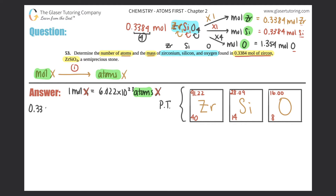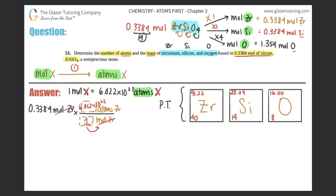For each one we take the moles and convert to atoms. So: 0.3384 moles of Zr — moles of Zr goes on the bottom, atoms of Zr on top. One mole equals 6.022 × 10²³ atoms. Moles of zirconium cancel out, leaving atoms of zirconium. So 0.3384 times 6.022 × 10²³ gives us 2.038 × 10²³ atoms of Zr. Four sig figs, because that's what was given.